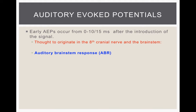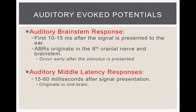The early auditory evoked potentials occur in the first 0 to 10 or 15 milliseconds, and they are thought to originate in the 8th cranial nerve. That is what we call the ABR — the auditory brainstem response — and that is what we use most often in audiology. We look at the first waves from the 8th cranial nerve. The ABR represents the first 10 to 15 milliseconds after the signal is presented to the ear, and it originates in the 8th cranial nerve and the brainstem.